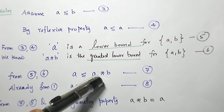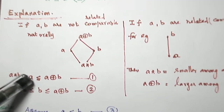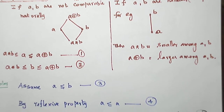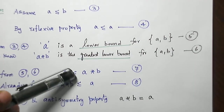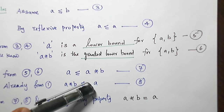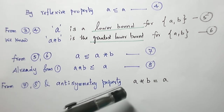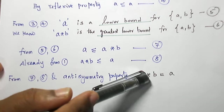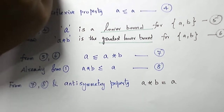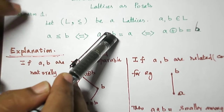Already we have A∧B ≤ A from inequality 1. So combining A ≤ A∧B and A∧B ≤ A, using the anti-symmetry property — if X ≤ Y and Y ≤ X then X = Y — we conclude A∧B = A. So one direction is proved: A ≤ B implies A∧B = A.